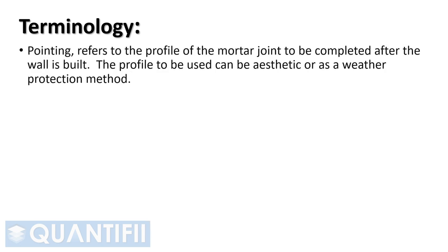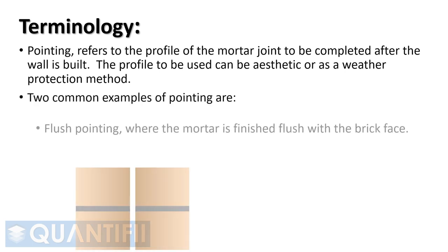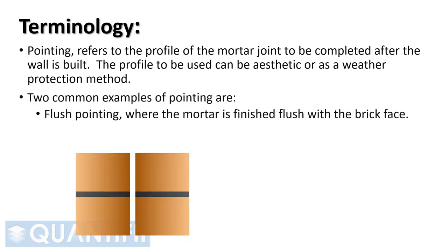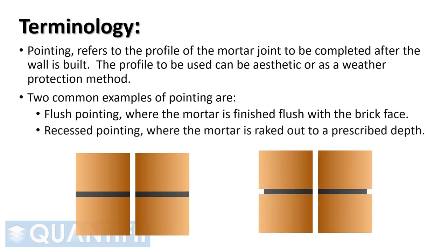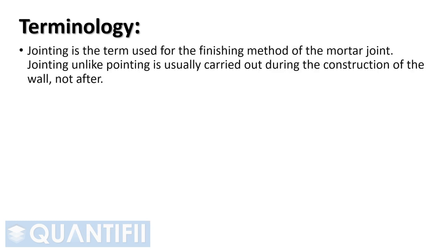Pointing refers to the profile of the mortar joint to be completed after the wall is built. The profile to be used can be aesthetic or is a weather protection method. Two common examples of pointing are flush pointing, where the mortar is finished flush with the brick face, and recessed pointing, where the mortar is raked out to a prescribed depth. Jointing is the term used for the finishing method of the mortar joint, and unlike pointing, is usually carried out during the construction of the wall, not after.